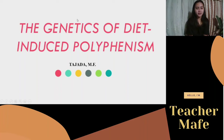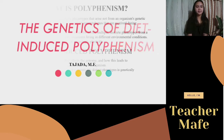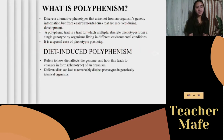Good day everyone! Today's lesson is about the genetics of diet-induced polyphenism. Polyphenism refers to discrete alternative phenotypes that arise not from an organism's genetic information but from environmental cues that are received during development.